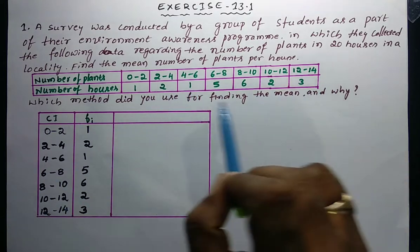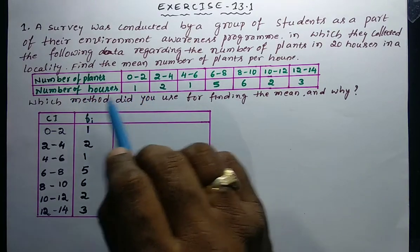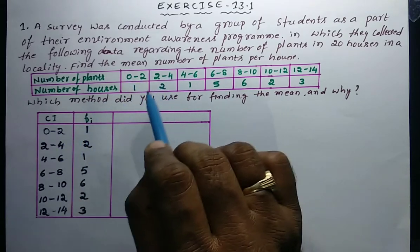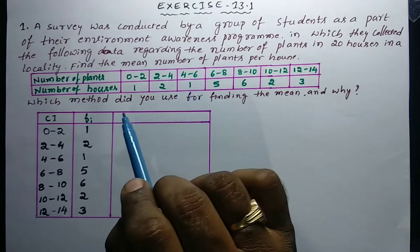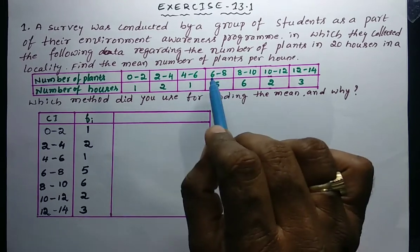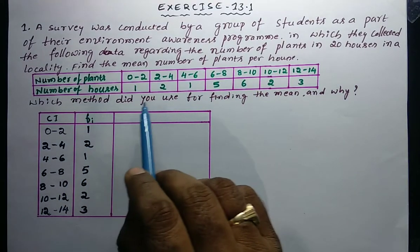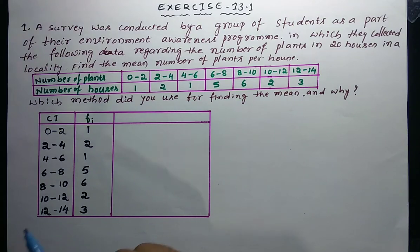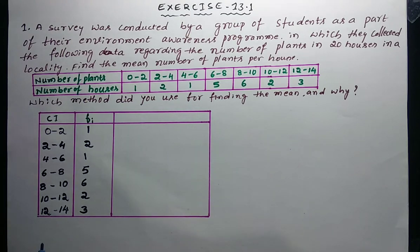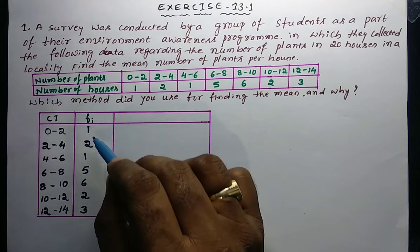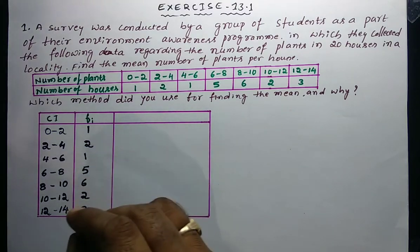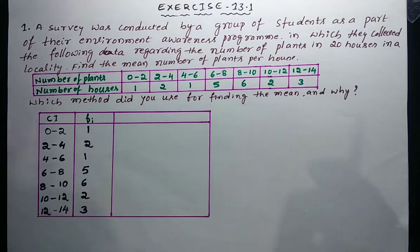The problem gives a table with number of plants as the class interval and number of houses as the frequency. The intervals are 0–2, 2–4, 4–6, 6–8, and so on, with corresponding house counts. We will use the direct method because fᵢ and xᵢ are small numbers.